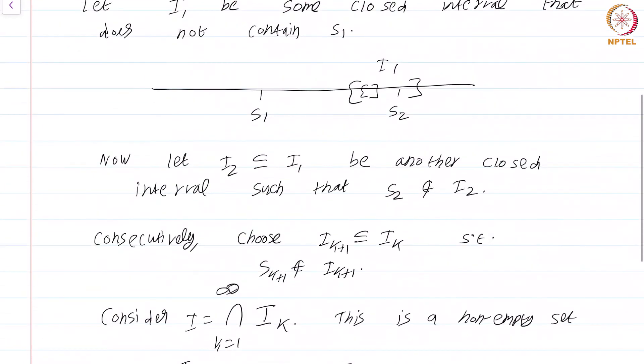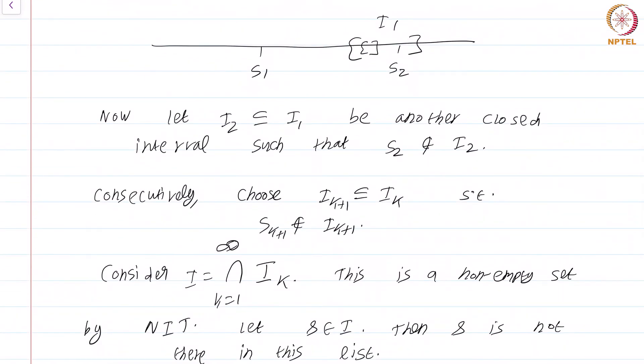This proves that there is no way to list out the real numbers, and if you recall our discussions on cardinality, listing out the elements is another equivalent condition for being countable. That means R is uncountable.